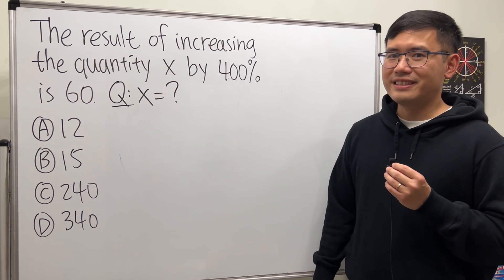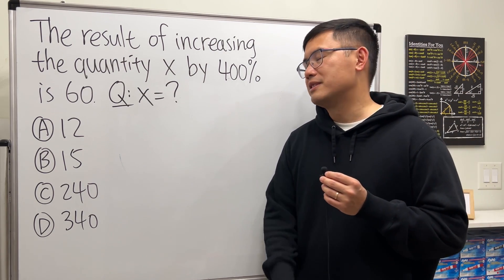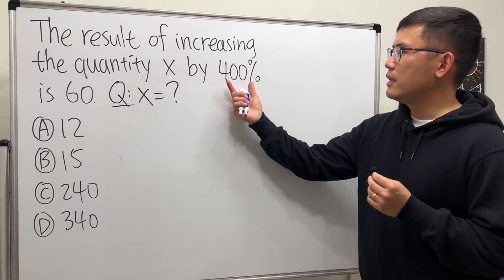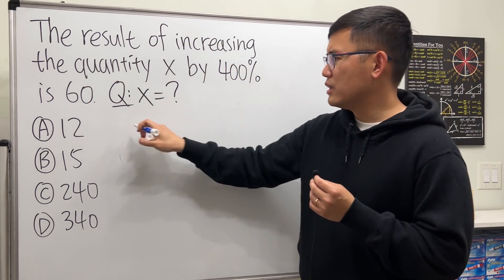Let me show you a common mistake that students make. Usually people will say, okay, x is increased by 400 percent, and they think that's just 400 percent of x.